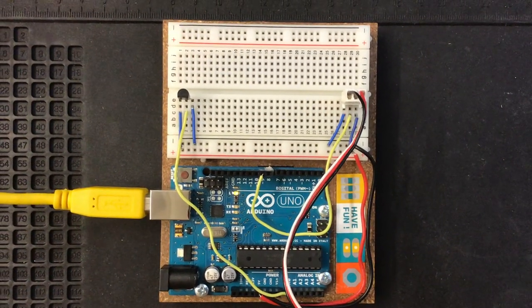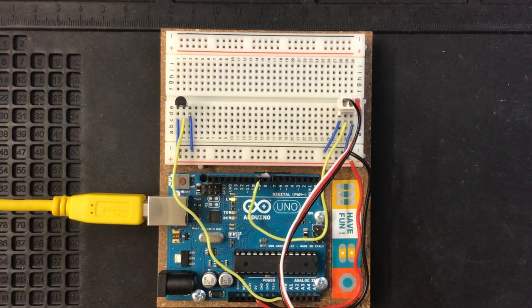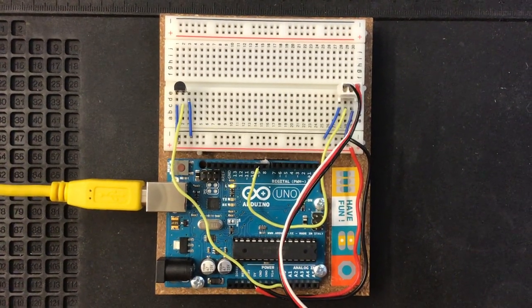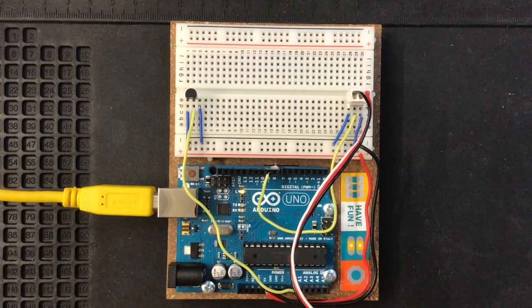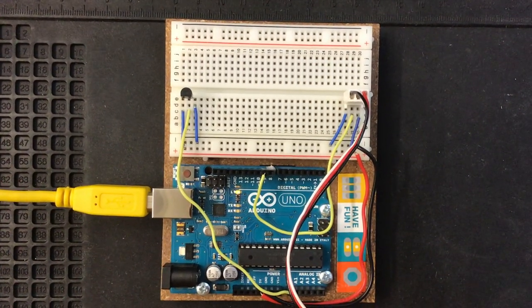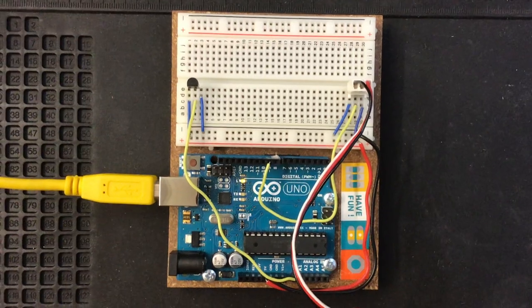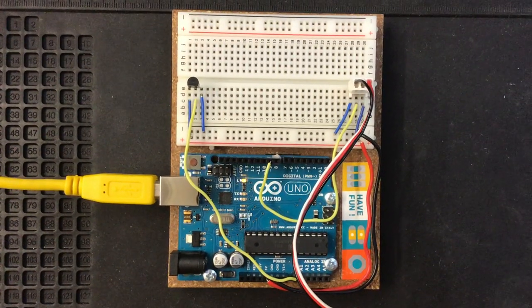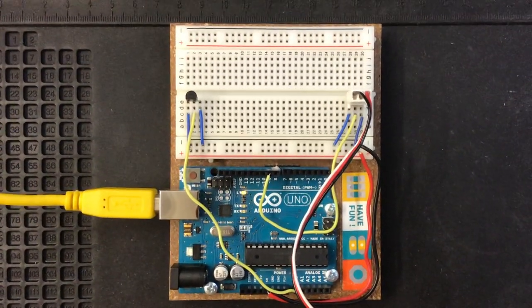This is what the circuit looks like right now. This has got a TMP-36 in one corner and the servo connection in the other corner. I've used yellow wires to indicate the signal lines and then blue wires to indicate the positive and negative to each of the components.